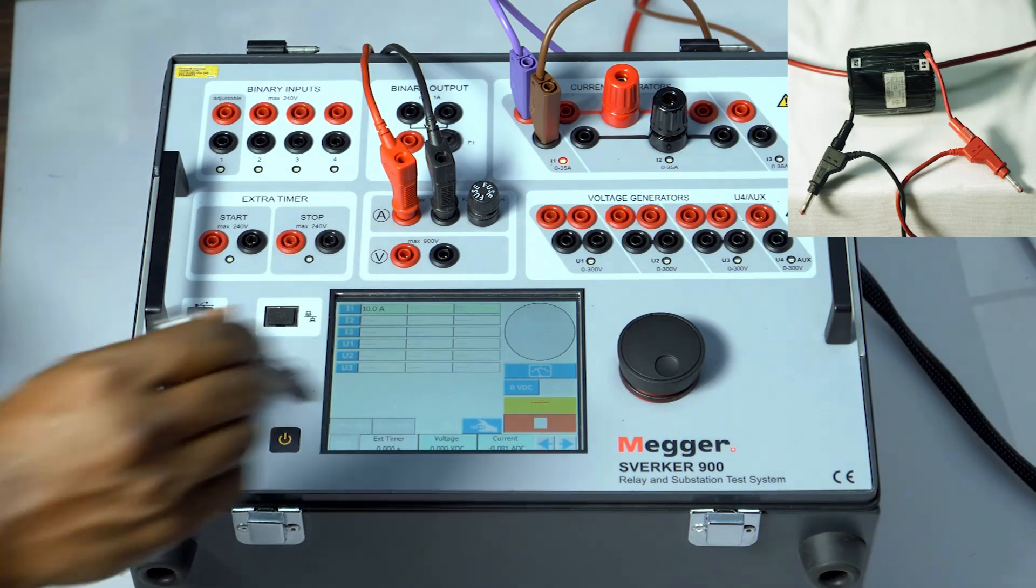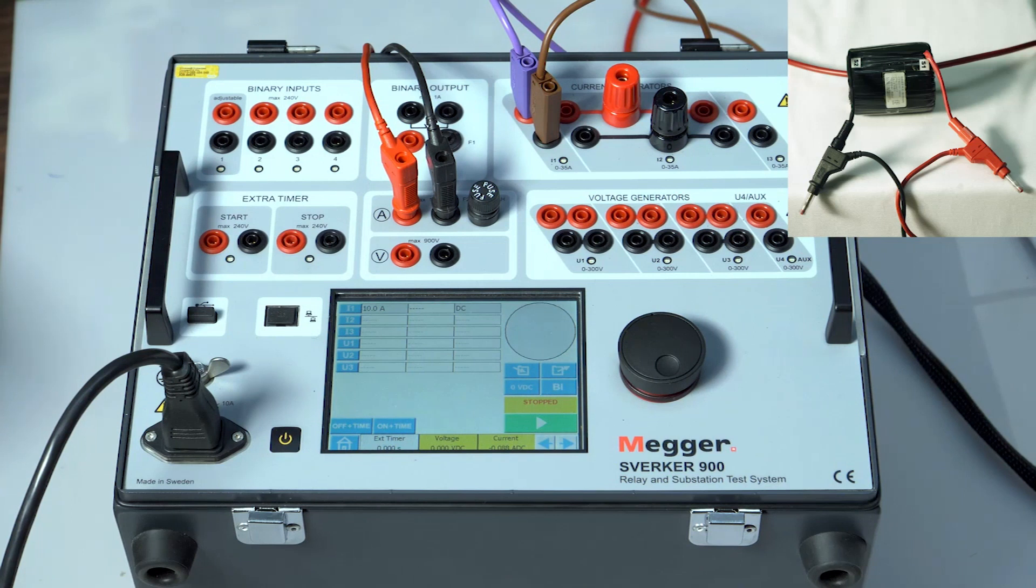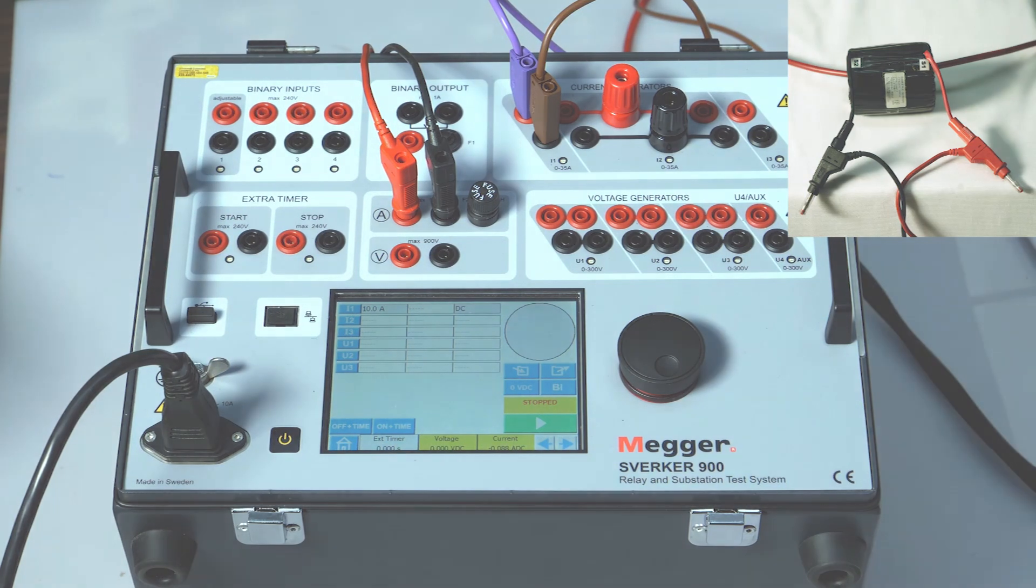Reverse the primary in the test kit and repeat the same process and observe the reading. The value should be negative.